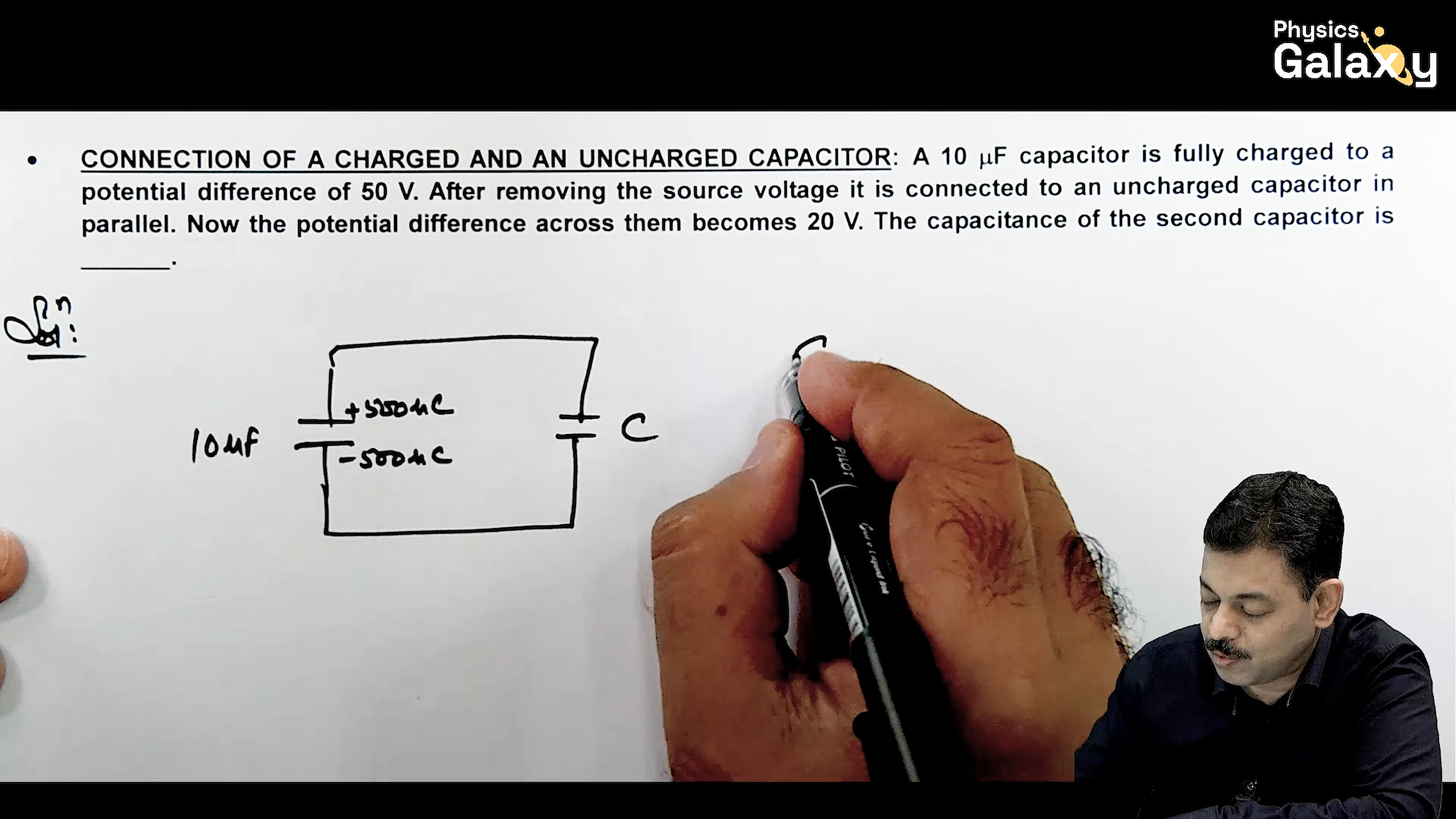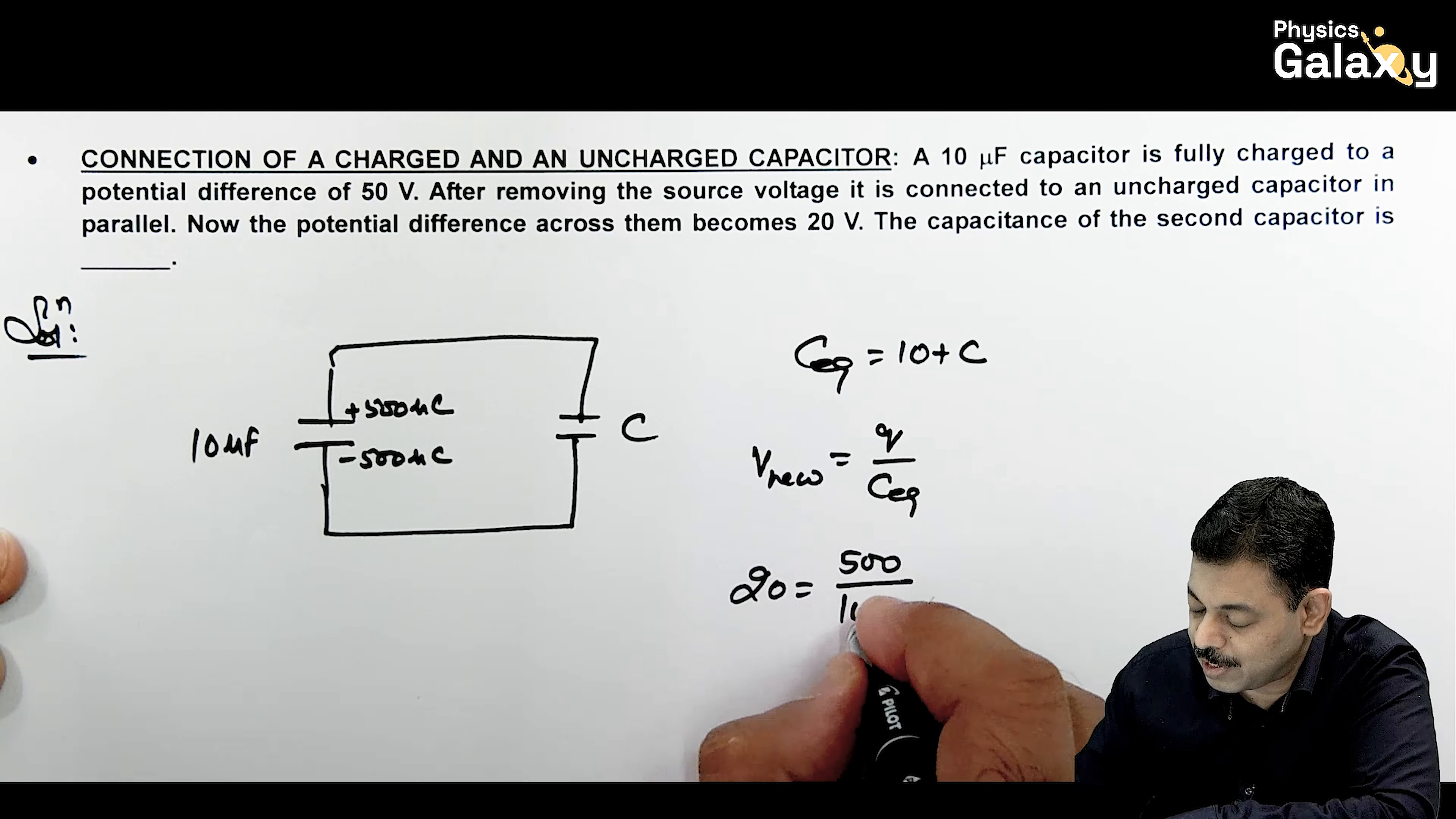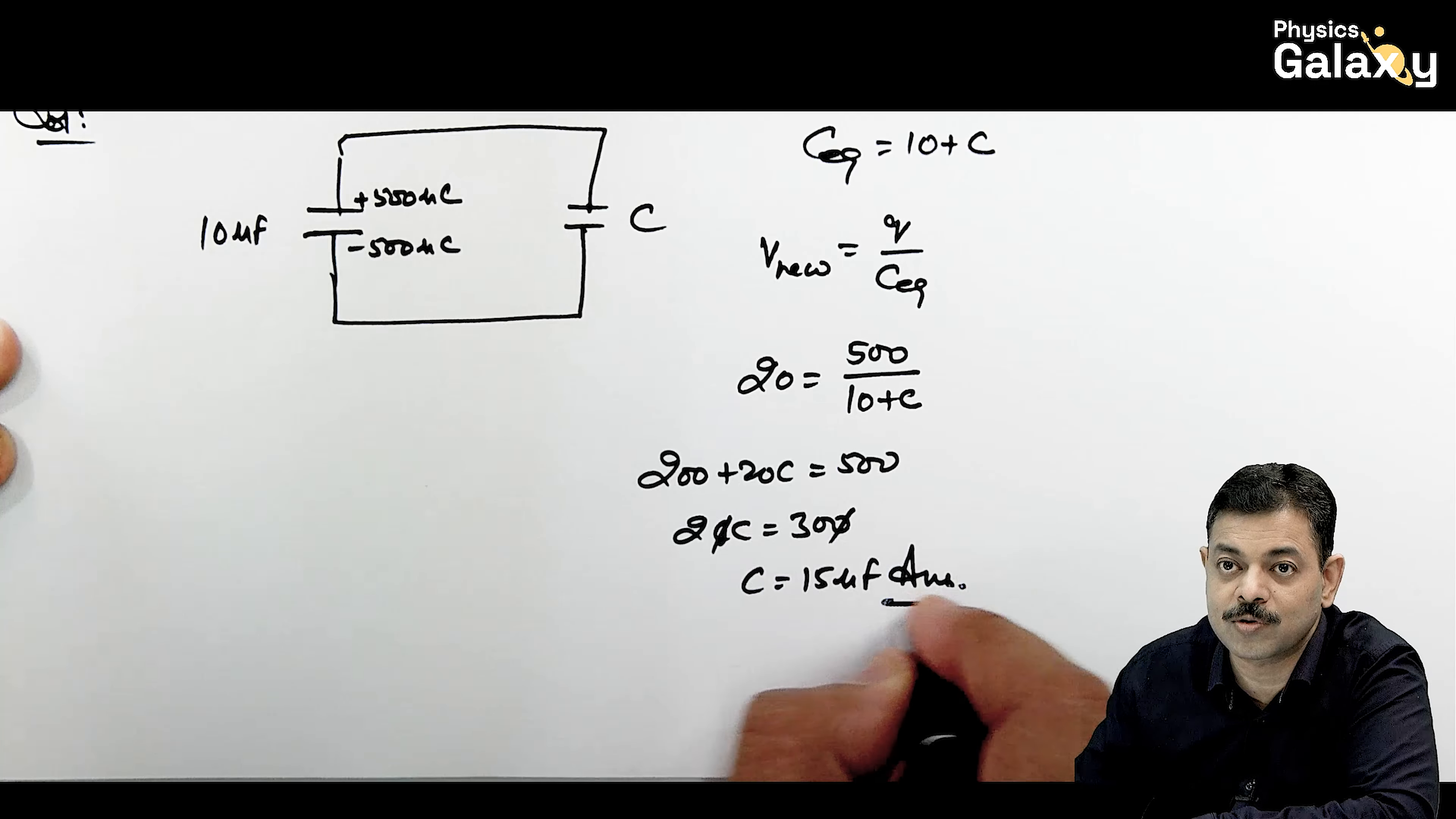So with CC, C_equivalent is 10 plus C. Charge is 500. So the new potential difference will be Q divided by C. So new potential difference is given to us as 20, which is equal to 500 divided by (10+C). If we solve this, this 200 plus 20C is equal to 500, 20C is equal to 300. So the value of C we are getting is 30 by 2 is 15 microfarad. That is the answer to this question.